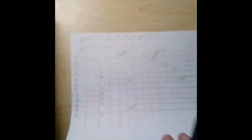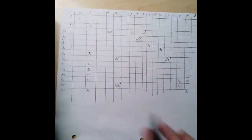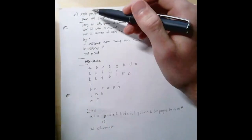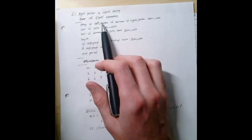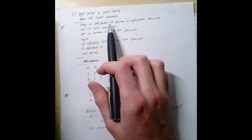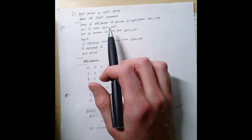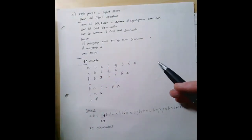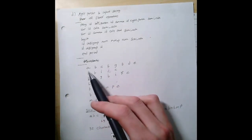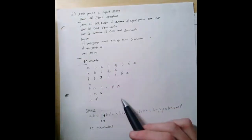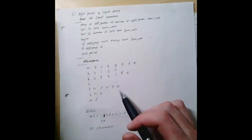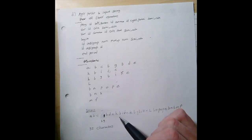Now it's time for the actual parsing — part D. Dr. Choi says: apply the parser to the input string and show all stack operations. Here's our initial input string: program, id, left-paren, id, comma… We translate this into our new terminal language: A, B, C, B, G, B, D, E — and so on. The full 32-character string is: A, B, C, B, G, B, D, E, H, B, I, J, E, H, B, G, B, I, K, E, L, B, N, P, O, P, E, B, N, B, M, F. This is what our predictive parser needs to evaluate.